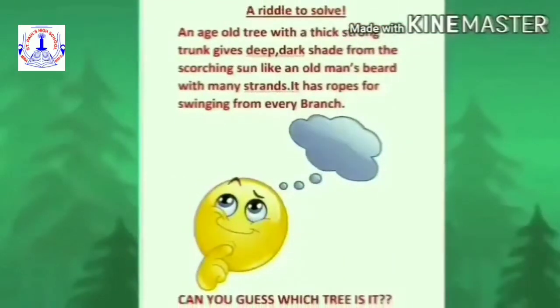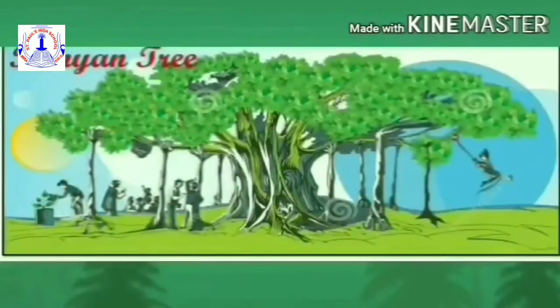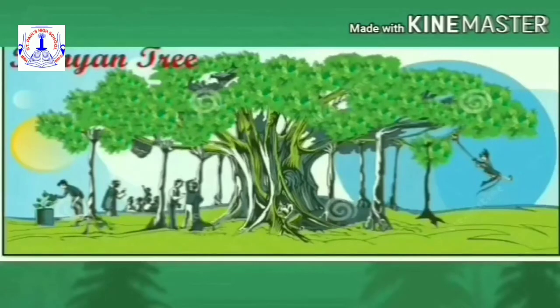Our topic name is Interrelationship Between Living Things. Before we begin with our topic, let's solve a riddle. I know you all like to solve riddles. I will show you a question and you have to think and give me the answer. A riddle to solve: an age-old tree with a thick strong trunk gives deep dark shade from the scorching sun, like an old man's beard with many strands. It has ropes for swinging from every branch. Can you guess which tree it is? Yes, it's the banyan tree. A banyan tree gives deep dark shade to the passers-by and shelter to the birds and animals. That is why we say that trees are our best friend.